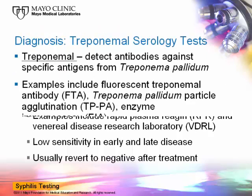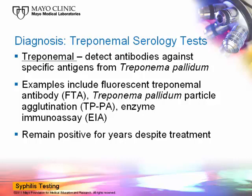The second class of syphilis serology tests is the treponemal assays, which are designed to detect antibodies against specific antigens from Treponema pallidum. Examples include fluorescent treponemal antibody, or FTA, Treponema pallidum particle agglutination, or TPPA, and newer generation assays such as enzyme immunoassays. Although these tests are typically more specific than non-treponemal assays, they will remain positive for years despite treatment, and this has significant implications that we'll discuss later in the presentation.